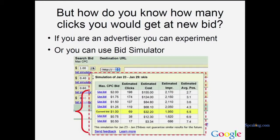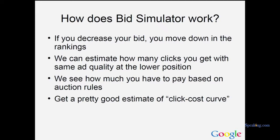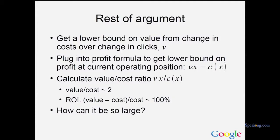But how do you know how many clicks you get if you bid less in the auction? You could experiment, or Google has a tool called a bid simulator. What the bid simulator does is basically rerun the auction from last week and show you what you would have gotten if you had done something differently — just by simulating the outcome of the auction. If you decrease your bid, you move down in the rankings, and we can estimate how many clicks you'd get from that lower position and how much you'd pay based on the auction rules. That gives a good estimate of the relationship between clicks and cost. Once you plug back into the value formula — value of clicks times number of clicks minus cost — you can calculate the value-to-cost ratio, which is like your ROI. It turns out the value over cost ends up being around two.